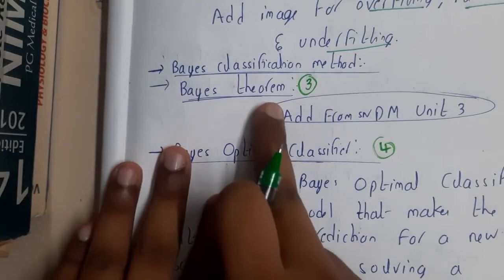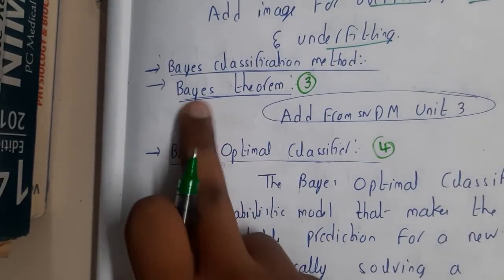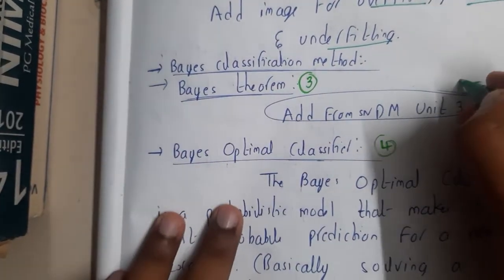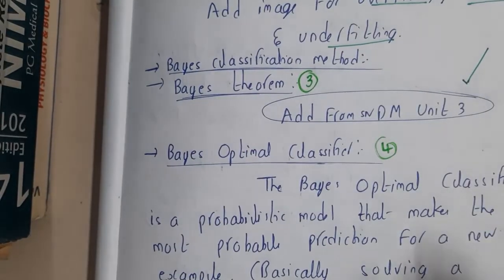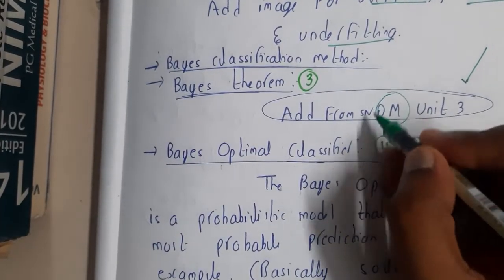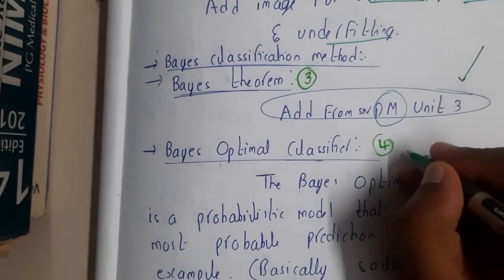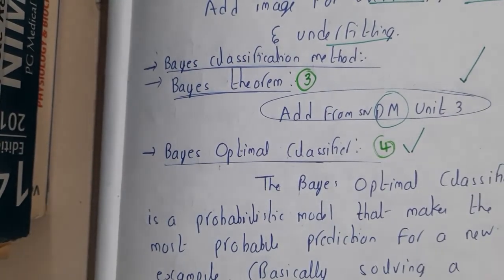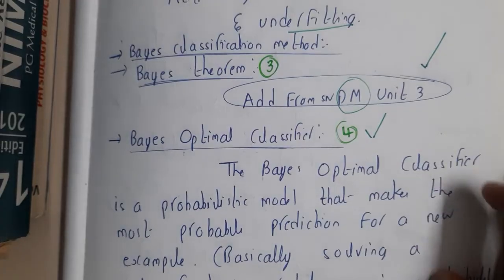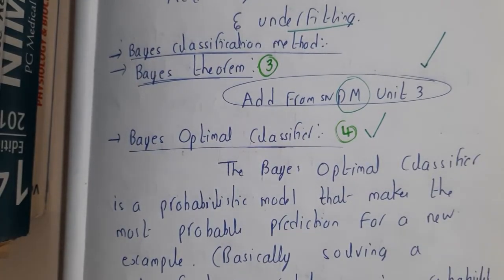In the next lecture, we'll continue with Bayes classification, and inside Bayes classification we'll discuss Bayes theorem. I'll mostly connect you back to a video we already did in data mining, as I don't want to repeat videos. In the next lecture, we'll discuss Bayes optimal classifier. Let's meet in the next lecture. Thank you.